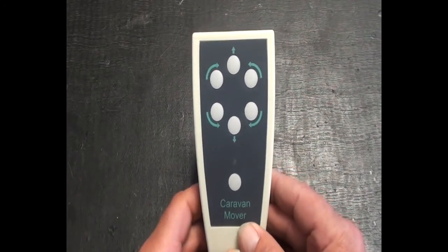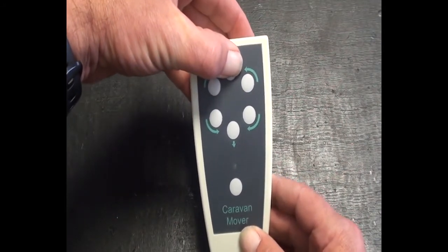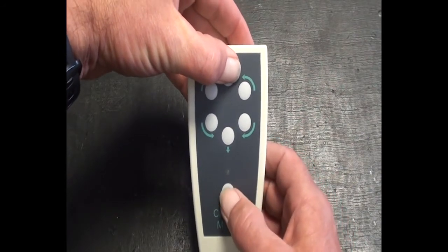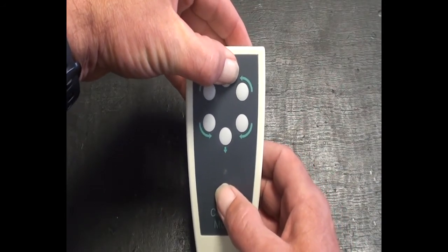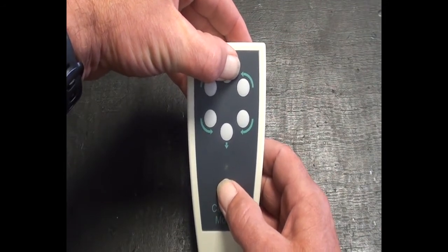So in order to set the program on the handset, we press the top button and then we turn the handset on by pressing the power button. We can then release the power button once the first LED comes on.